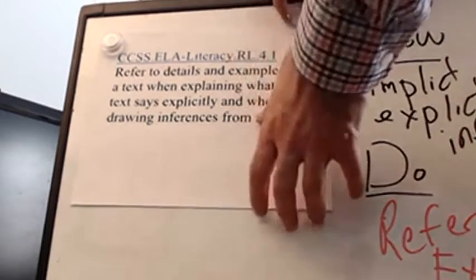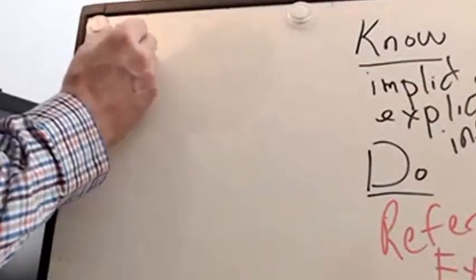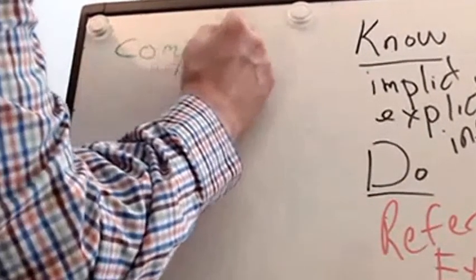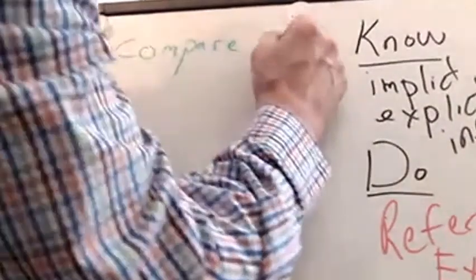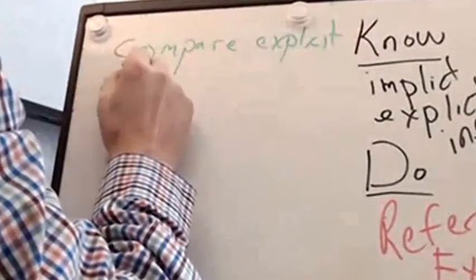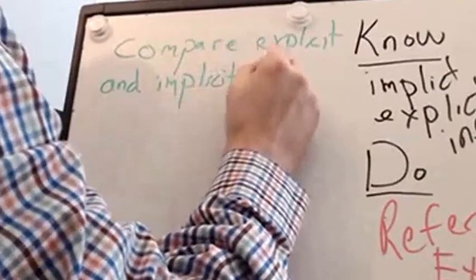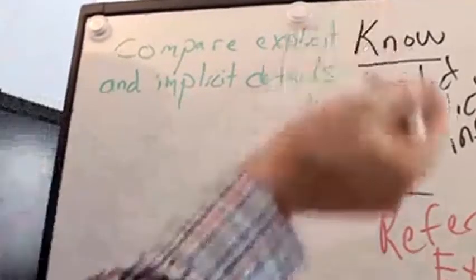If we wanted to just write some example standards, let's think about that. We need implicit and explicit. Right there we could do, we could have students compare explicit and implicit details. That could be a standard. If you want to add conditions, you could say in a text.